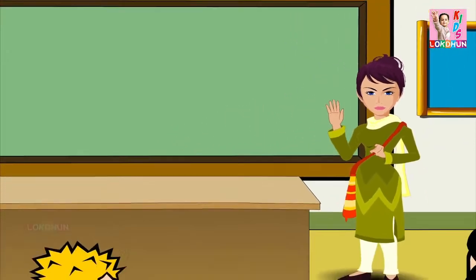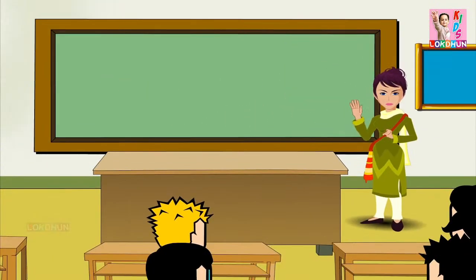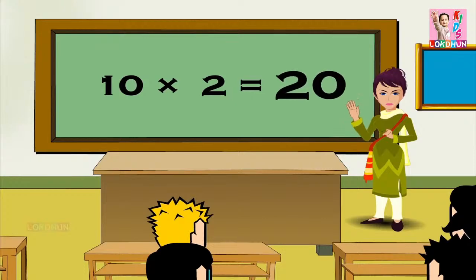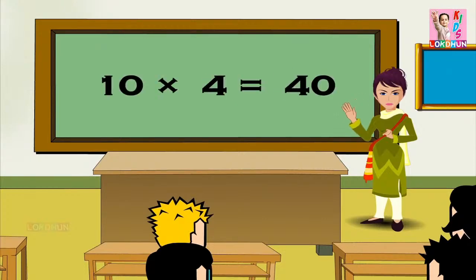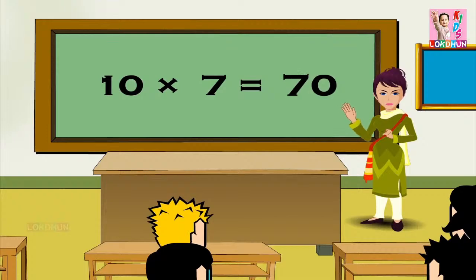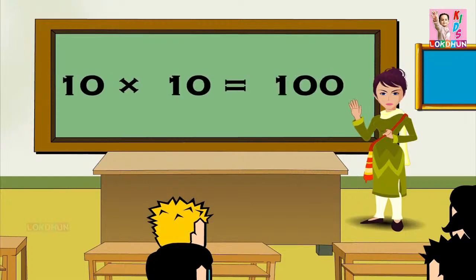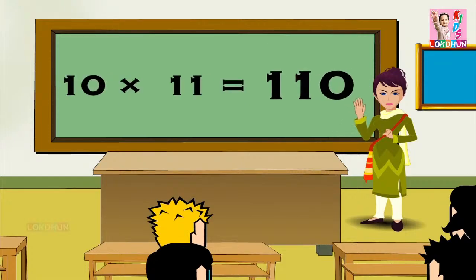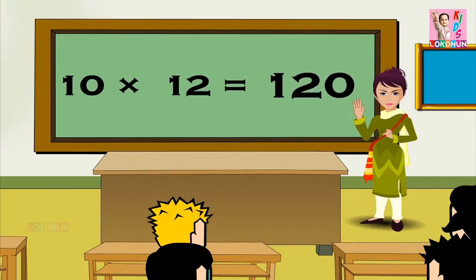10 1s are 10, 10 2s are 20, 10 3s are 30, 10 5s are 50, 10 6s are 60, 10 7s are 70, 10 8s are 80, 10 9s are 90, 10 10s are 100, 10 11s are 110, and 10 12s are 120.